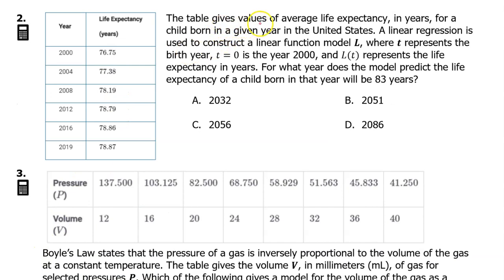Number 2. The table gives values of average life expectancy in years for a child born in a given year in the United States. A linear regression is used to construct a linear function model L, where t represents the birth year, t equals 0 is the year 2000, and L of t represents the life expectancy in years. For what year does the model predict life expectancy of a child born in that year will be 83 years?